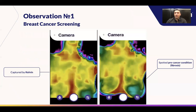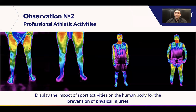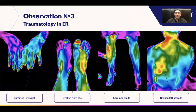Here you can see various examples. For example, fibrosis on the left breast. We also have the effect of severe physical activity on the human body.